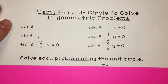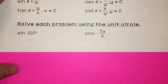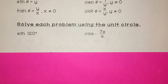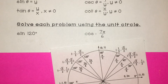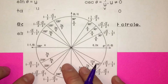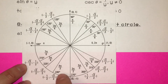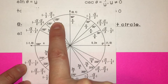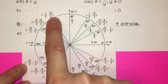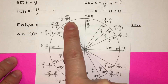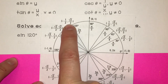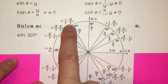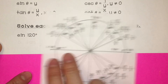So we're going to use these to solve some problems. The first one is sine of 120 degrees. I'm going to use my unit circle here to find where it's 120 degrees. Sine is the y value, so the y coordinate at 120 degrees is just the square root of 3 over 2.